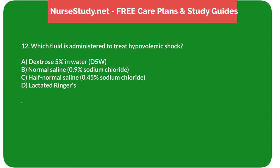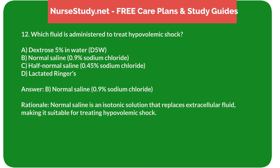Question 12: Which fluid is administered to treat hypovolemic shock? A. Dextrose 5% in water (D5W). B. Normal saline, 0.9% sodium chloride. C. Half normal saline, 0.45% sodium chloride. D. Lactated Ringer's. Answer: B. Normal saline, 0.9% sodium chloride. Rationale: Normal saline is an isotonic solution that replaces extracellular fluid, making it suitable for treating hypovolemic shock.